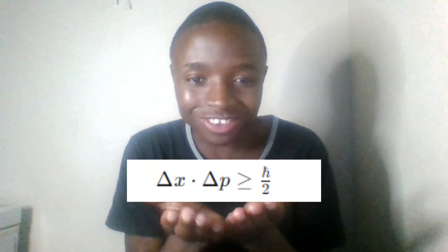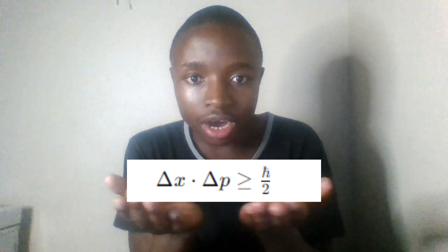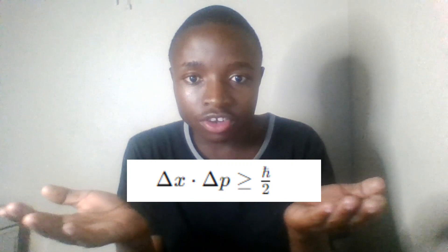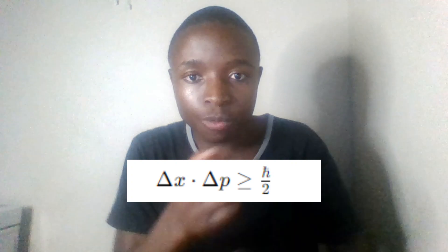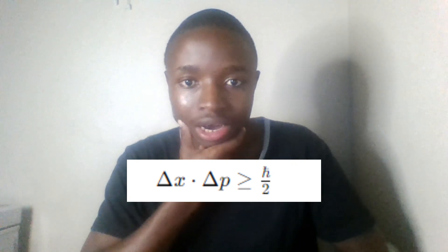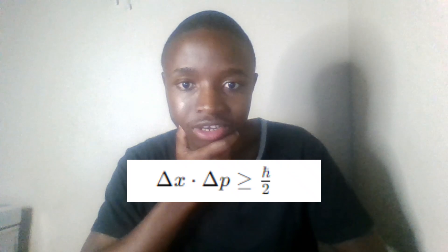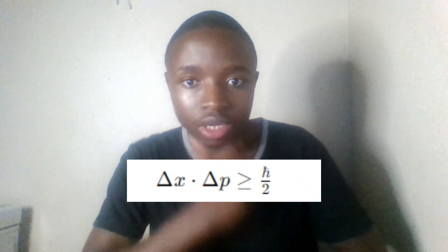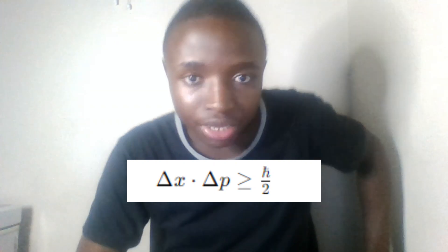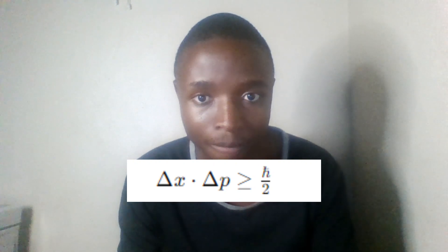The equation looks like this: delta-x dot delta-P, greater than or equal to h-bar divided by 2. That is the Heisenberg uncertainty principle.